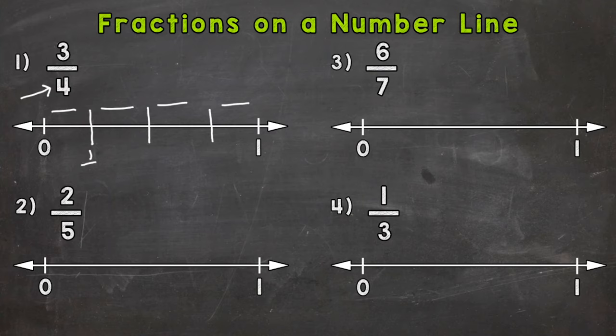So our first mark is one-fourth. Then we have two-fourths, or a half if it was simplified. Three-fourths, and then four-fourths, which is equal to one whole. Whenever you have the same number as your numerator and denominator, it equals one whole. So we have everything marked on our number line. Then we need to find three-fourths, which is right here. And we are good to go with number one.